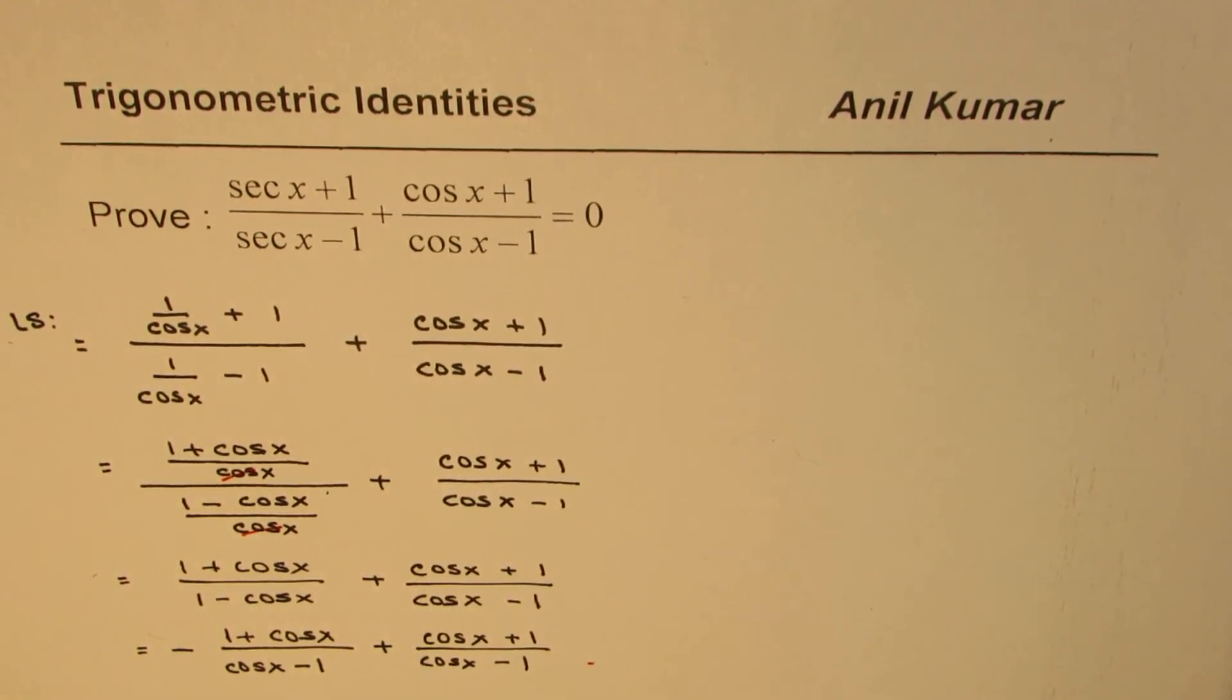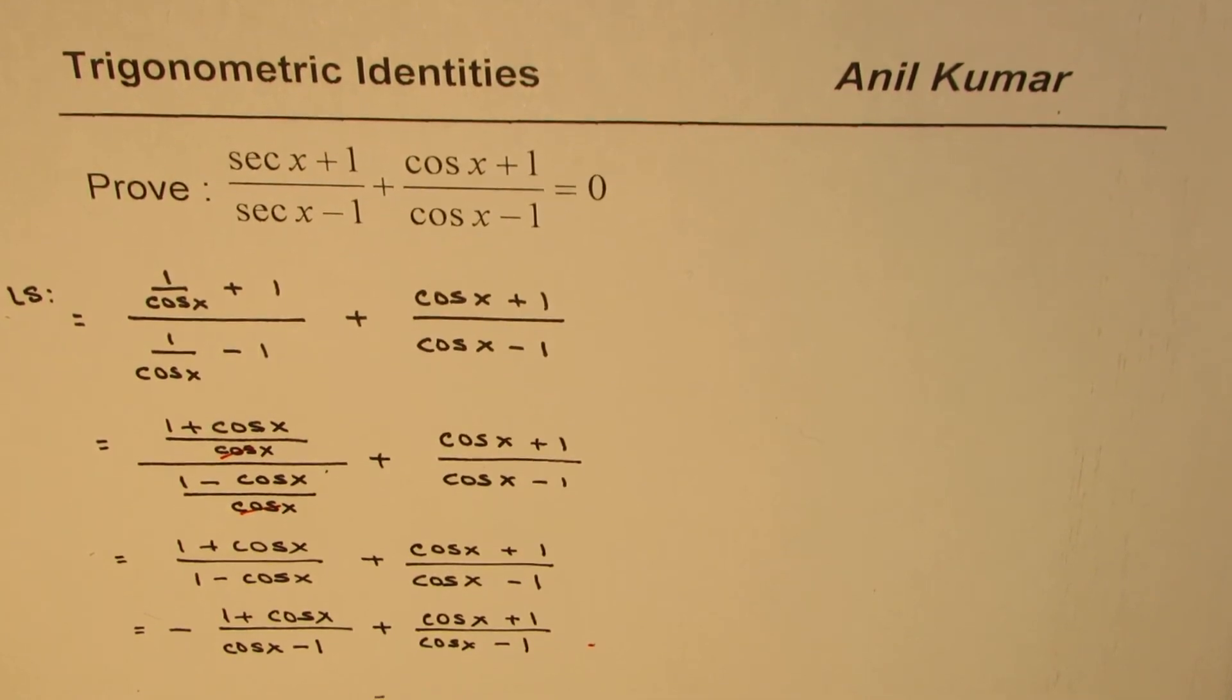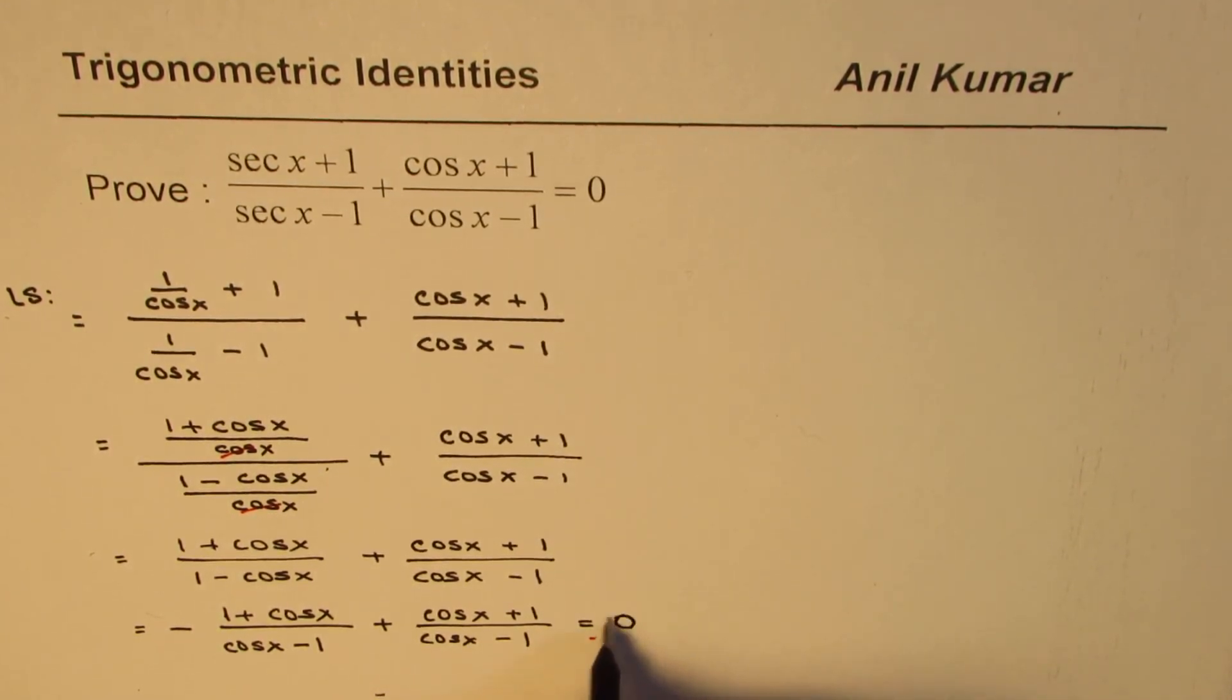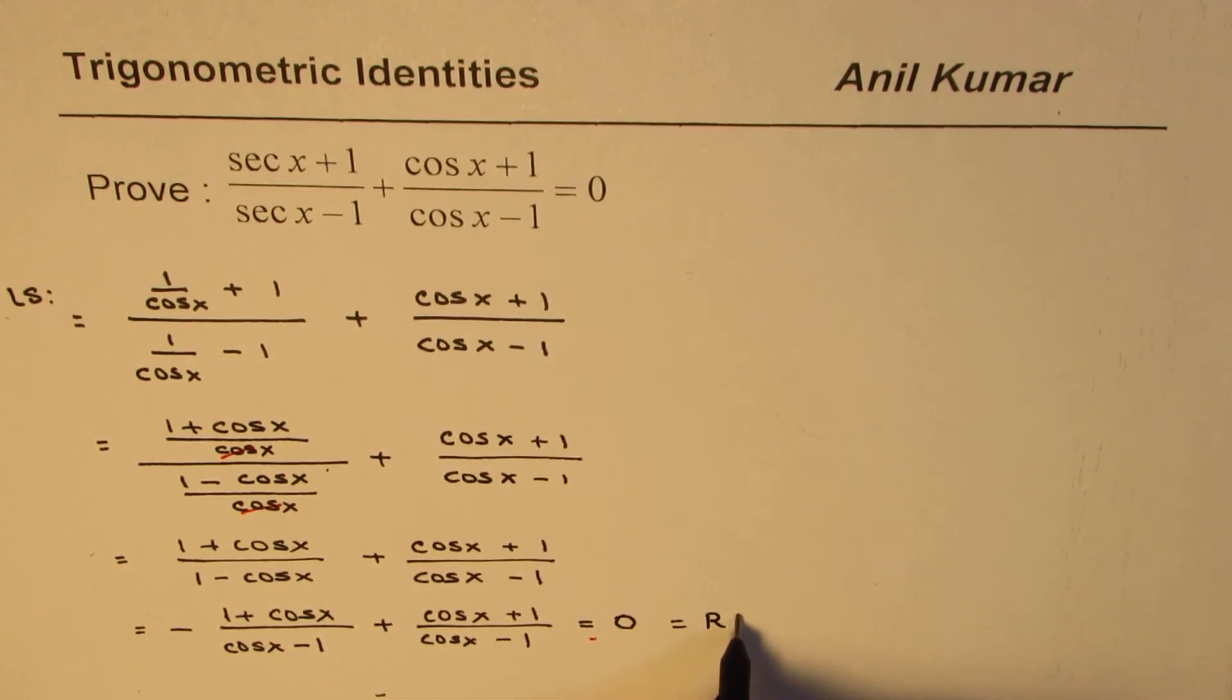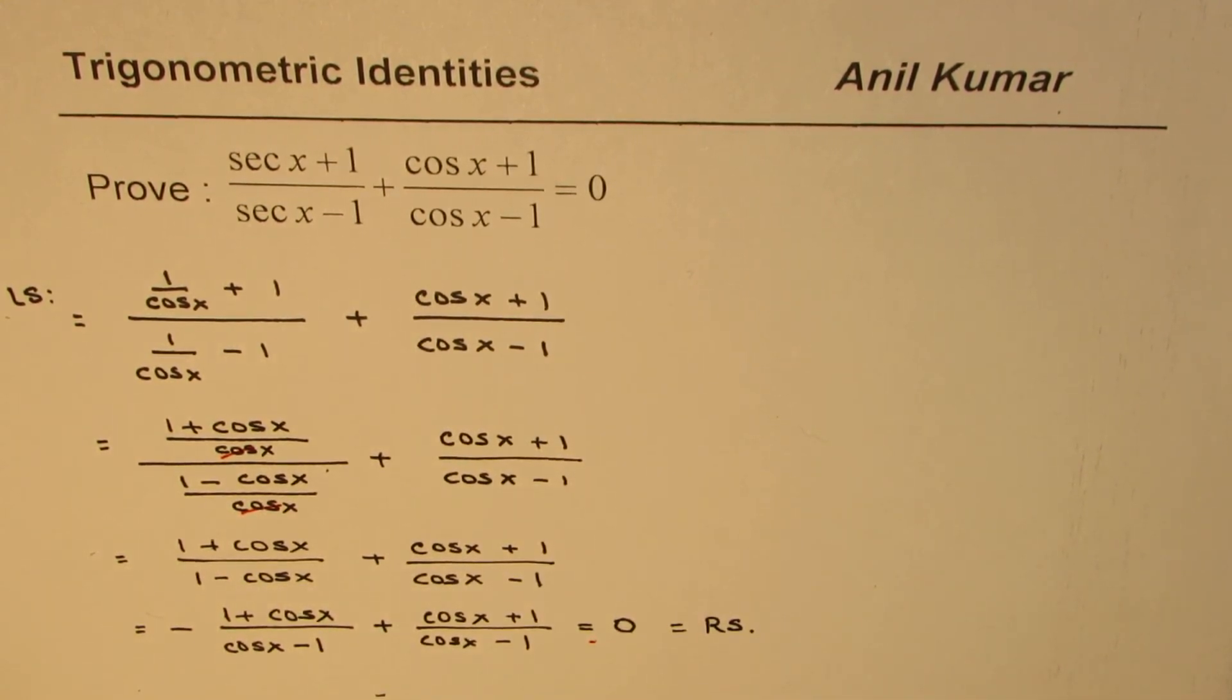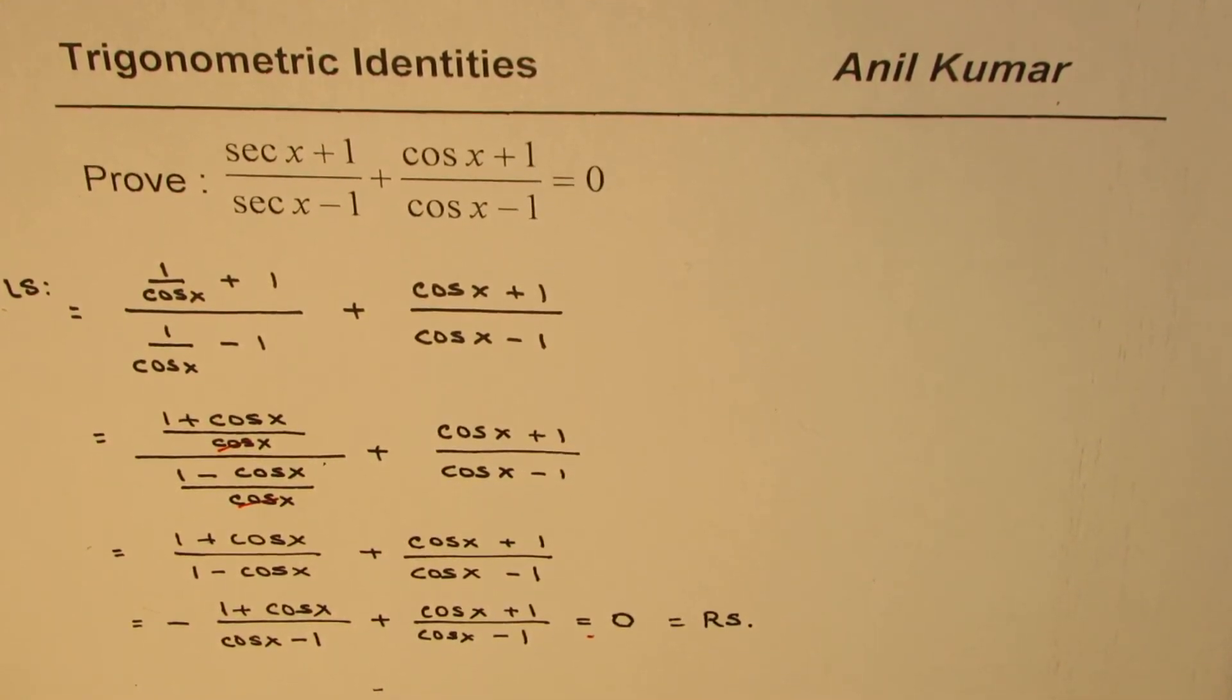Now, we have shown that the first term is negative of the second term and their combination is indeed equal to 0, which is what we wanted to prove. So that is how you prove this identity. I hope that helps. Thank you and all the best.